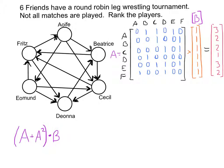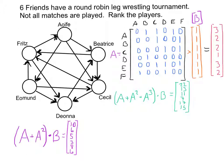So let's see what those entries are. Apha is definitely coming out ahead, but I still have a 6 here and a 6 here, so I still have a tie and I want to settle that. So I'm going to go one step further — A plus A squared plus A cubed — get that entry and then multiply by the column matrix.